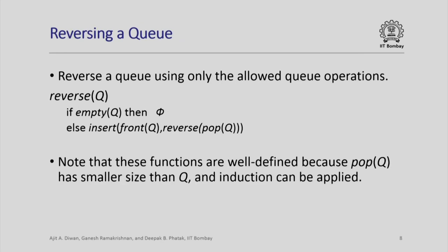Here is a way of reversing a queue using only these operations. If the queue is empty, do nothing; otherwise, remove the front element, reverse the remaining queue which is pop(queue), and then insert the front element into that reversed queue. Since the insert operation puts it at the end of the queue, this gives you the reverse of the original queue. These operations are well defined because pop(queue) has smaller size than queue, so we are using induction here.